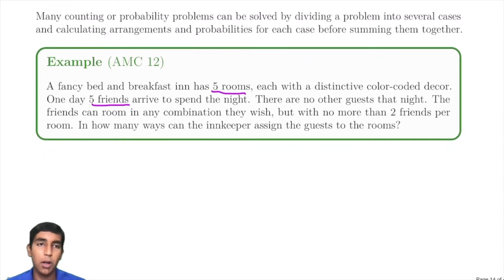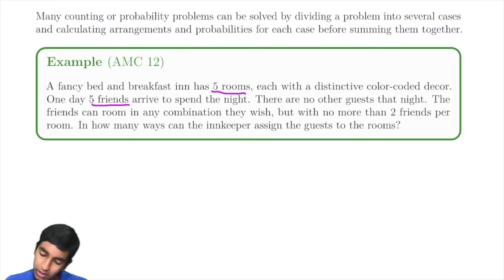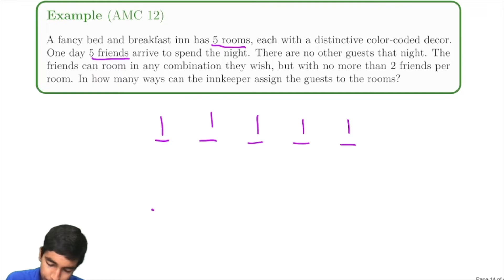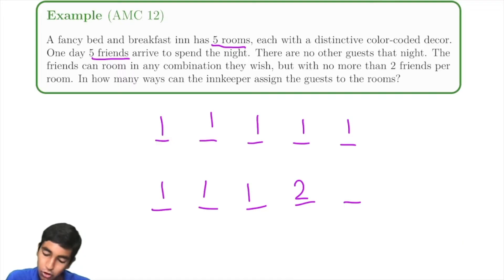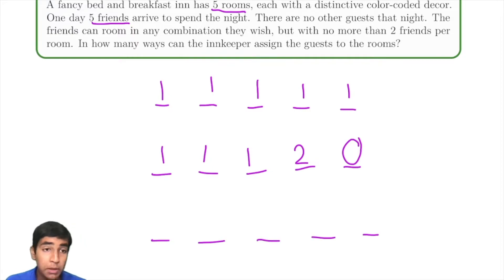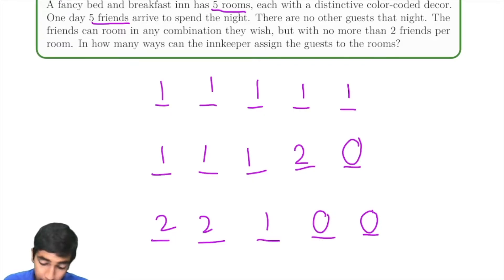How can we approach this problem and split it into cases? A good habit is to write out your cases before you start evaluating them. The first case is they all have their own room. The second case is two of them are in the same room, three people still have their own room, and one room has no people. The third case is two rooms with two people each, and then one person left who occupies their own room. We can't have three rooms with two people because there are only five people total. These are the only three cases.